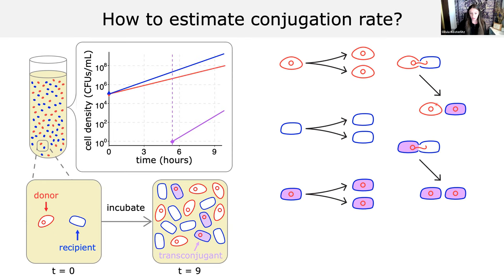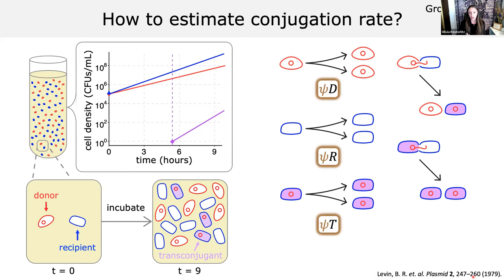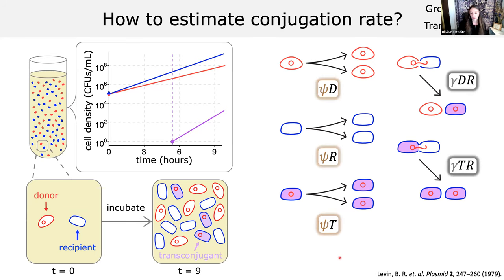There are five key events that can happen in the tube as it incubates. These dynamics were modeled using a set of differential equations by Bruce Levin and colleagues, where each population type is a variable. The three populations have exponential growth, shown with a brown rate parameter — the same across all three populations in the original model. Transconjugants are created due to plasmid transfer events from donors, with transfer rate in gray, also the same for both types of events.